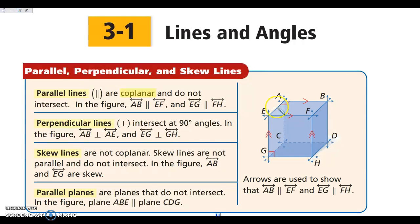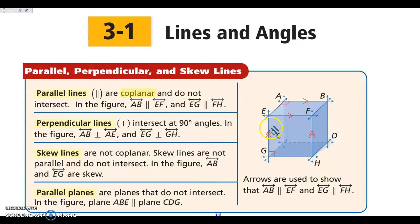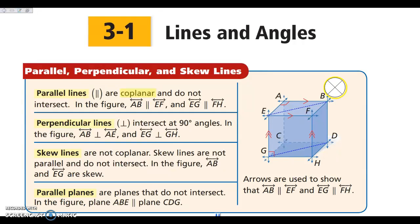Even though the plane that contains EG and BD is not drawn, I could very easily draw one that goes this way and connects here. Even though it's not drawn, I still have the ability to draw a plane that connects them, so they are still parallel.